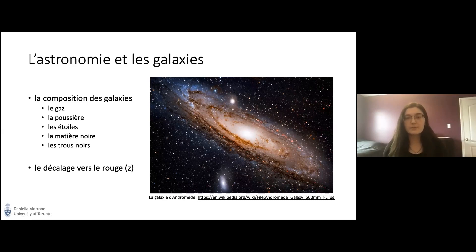Maintenant j'explique le concept du décalage vers le rouge. C'est une mesure de la façon dont les rayons de lumière des objets lointains s'étirent au cours du chemin vers la Terre. Par conséquent le décalage vers le rouge est une mesure de la distance des objets.